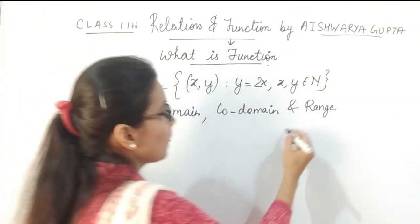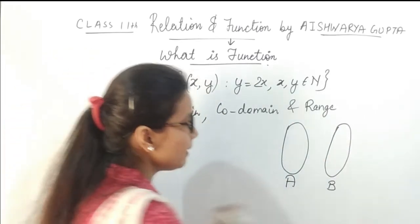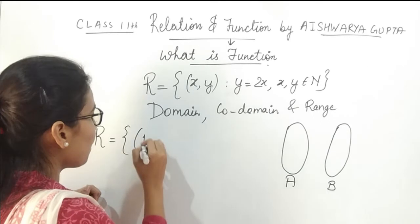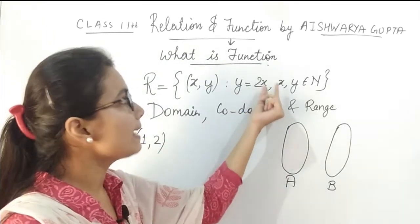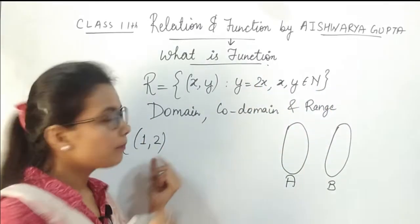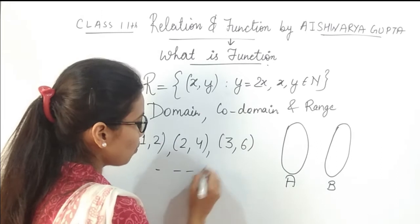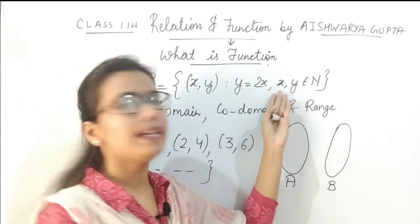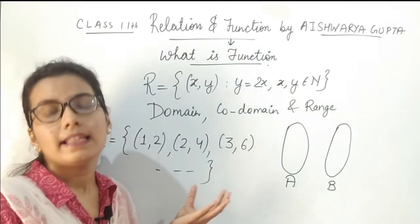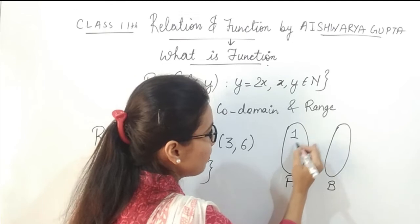To check whether this is a function, we need to verify that every element of set A has a unique image in set B. Let x belong to set A and y belong to set B. Putting x = 1, 2, 3, ... into y = 2x, the relation set becomes {(1,2), (2,4), (3,6), ...} and so on, since natural numbers go up to infinity.